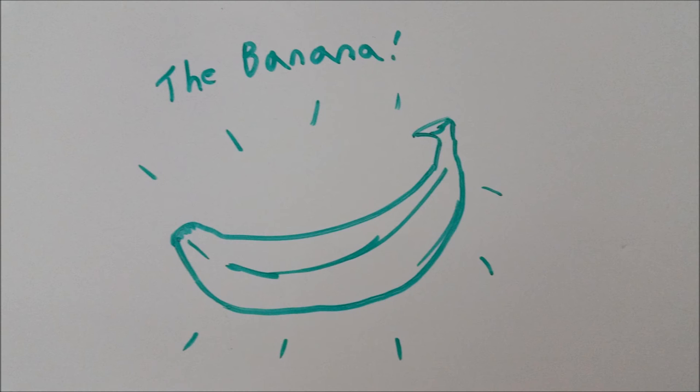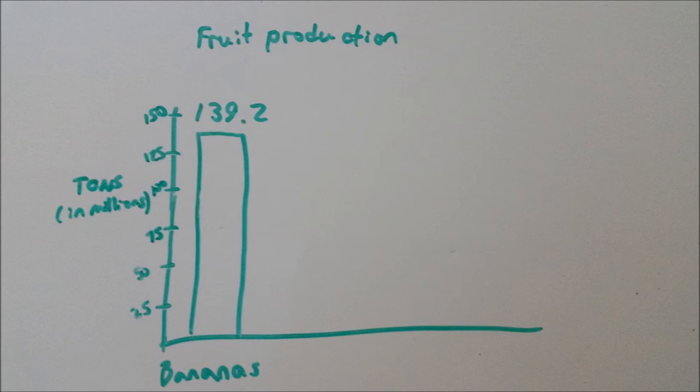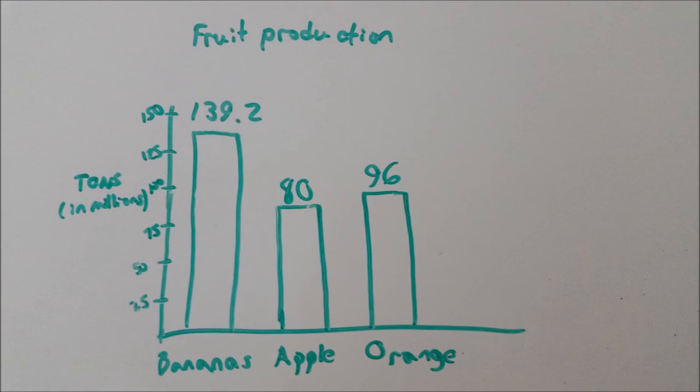To explain this, we'll need to look at the most popular fruit of all time, the banana. Bananas are the world's favorite. In 2011, there were an astounding 139.2 million tons of them produced, an amount not even the proud apple or orange can touch, at 80 million and 96 million, respectively.